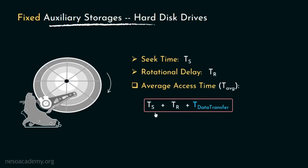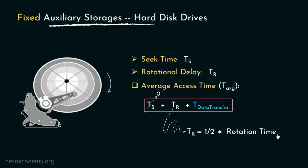While solving numerical problems, if TS — that is, seek time — is not explicitly mentioned, we assume it as zero. And if TR — that is, the rotational delay — is also not specified, we generally assume that TR is equal to half of the rotation time. So this is how we calculate the average access time of hard disk drives.